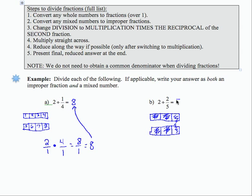So the result here should be 5. Let's see how that works with the actual rules. 2 is 2 over 1. I'm going to change my division to multiplication.